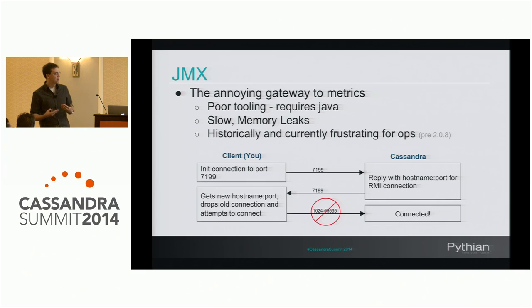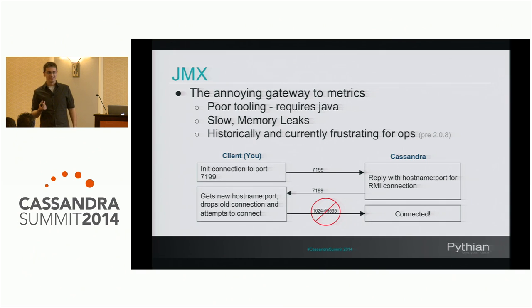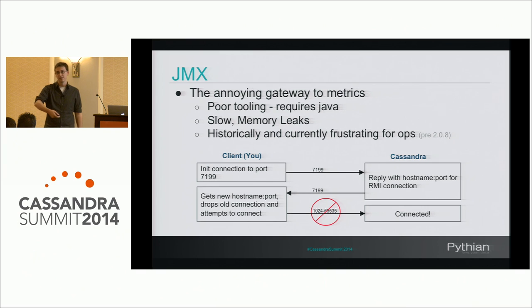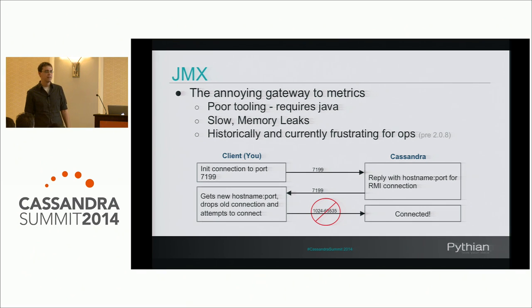The primary frustration is a mechanism where when you make a connection to the JMX port, it replies back with a different hostname and port tuple that you then reconnect to. Initially that port was random, making it virtually impossible to set up a firewall. In more recent JVM versions, there's an option to set the port for the second connection — it can actually reuse the initial JMX port — and this is configured by default in Cassandra after 0.8.